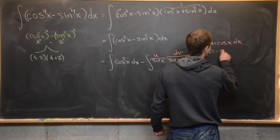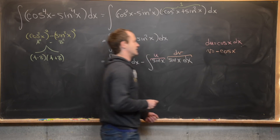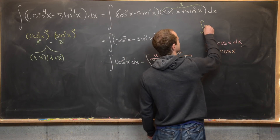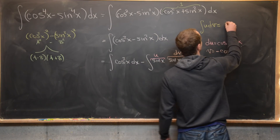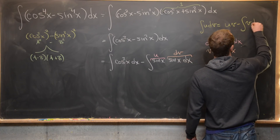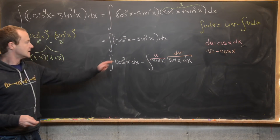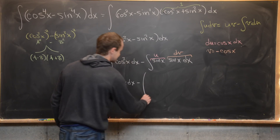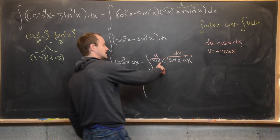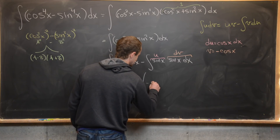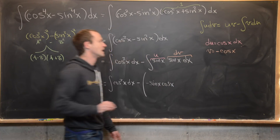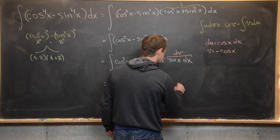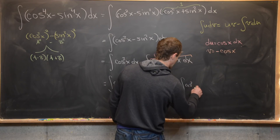That tells us du equals cosine of x dx, because the derivative of sine is cosine, and v equals negative cosine x, because that's the antiderivative of sine. Applying the integration by parts formula — integral of u dv equals u times v minus the integral of v du — we get the integral of cosine squared x dx, minus (sine x times negative cosine x), minus the integral of hyperbolic sine times cosine x dx, which gives a plus the integral of cosine squared x dx.